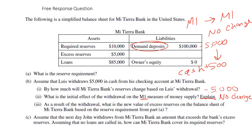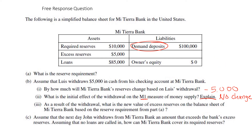If you forgot about M1, go back and look at those notes about money. M1 is highly liquid — like demand deposits and cash. M2 is less liquid, things like savings accounts that are not easily spendable. As a result of the withdrawal, what is the new value of excess reserves on the balance sheet of Meteora Bank? Our new excess reserves equal five hundred dollars — because when demand deposits became ninety-five thousand, required reserves only needed to be nine thousand five hundred, and we moved the remaining five hundred to excess reserves.